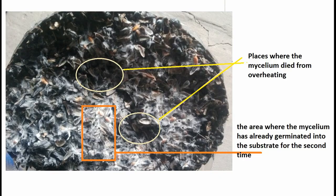If we cut such a block in half across, we will see that there is no white mycelium in the center — there is a black spot. If you start to gradually reduce the temperature in the room and the temperature in the center of the block drops to 32 or 33 degrees, the mycelium will most likely occupy the black spot again.